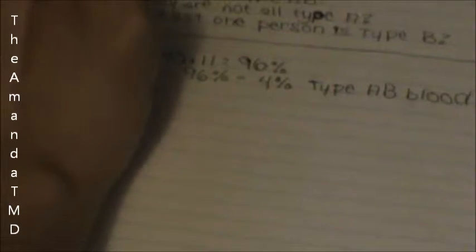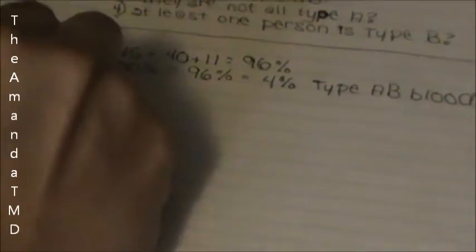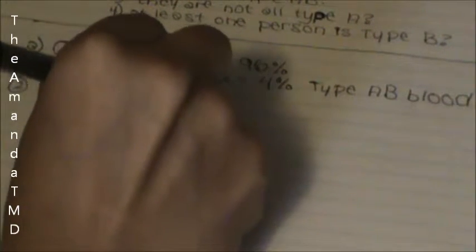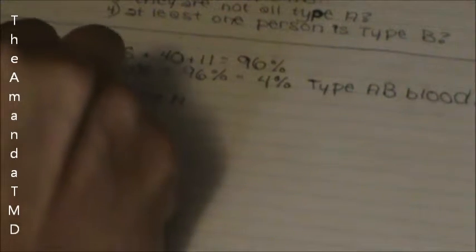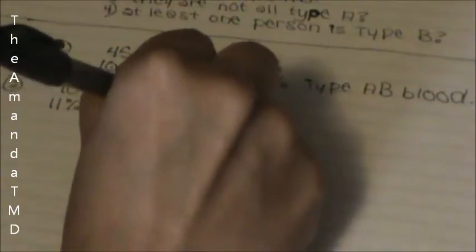To find out type A or type B, I would look at my probabilities for type A and type B, which is 40% is type A, 11% is type B, and I have to change these to decimals so I can multiply them.